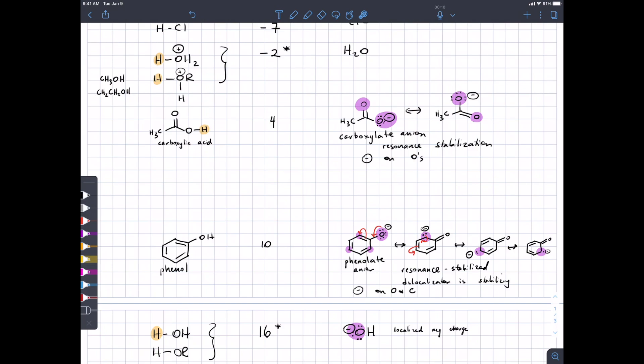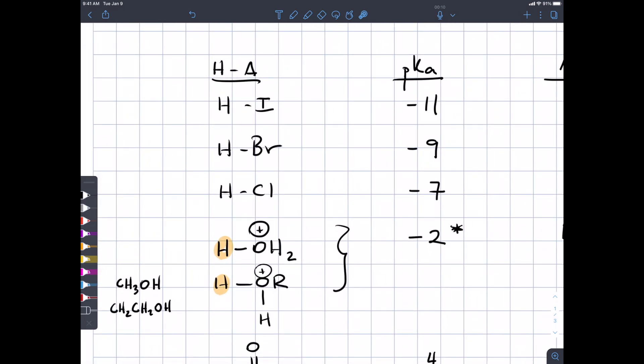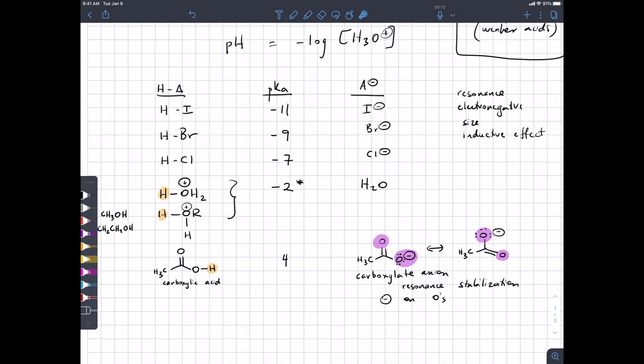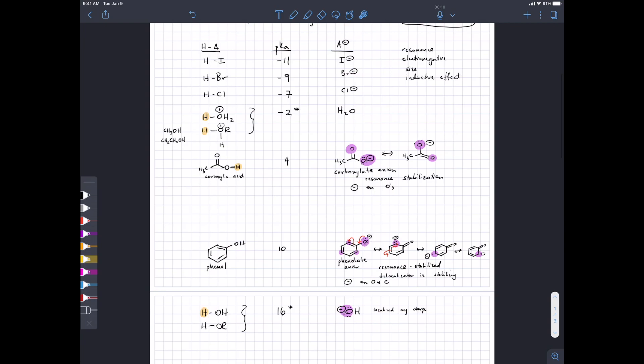Student asks why is iodine more acidic? Why is HI so much more acidic than water? Let's compare iodide with OH minus. That difference in acidity is huge. I mean 16 versus minus 11, that's a factor of 10 to the 27 in equilibrium constant. That's maybe more atoms than are on the Earth total, and possibly more stars than are in the universe.